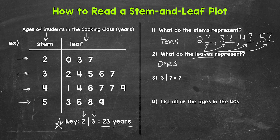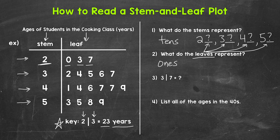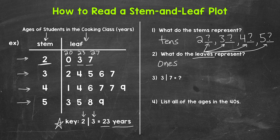Let's put this all together and look at the stem of two. If we have the stem of two, let's move over to the leaves where we have zero, three, and seven. If we put the stem and those leaves together, we have 20, 23, and 27. So those are all of the ages in the twenties. Looking at the stem and leaf plot, we have a twenties group, a thirties group, a forties group, and a fifties group — so everything is organized.